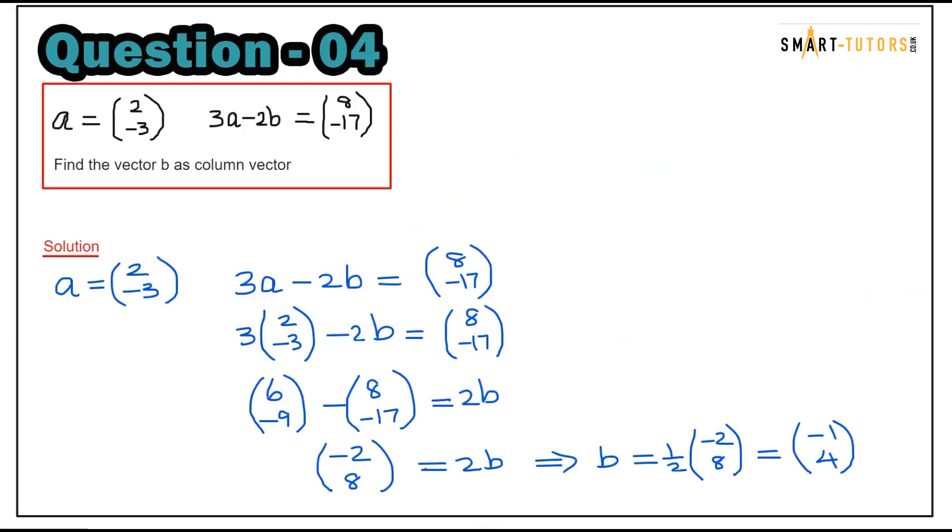Question number four: a column vector is given, a equals 2, negative 3. 3a minus 2b equals 8, negative 17. Find vector b. It's simple algebra format. 3a minus 2b equals 8, negative 17. Substitute a: 3 times 2 is 6, 3 times negative 3 is negative 9. Bring 8, negative 17 to this side. 2b equals negative 2, 8. Divide by 2 to get b equals negative 1, 4.